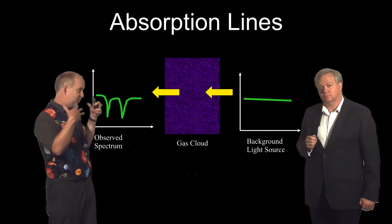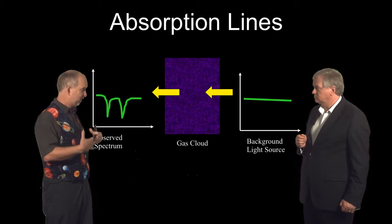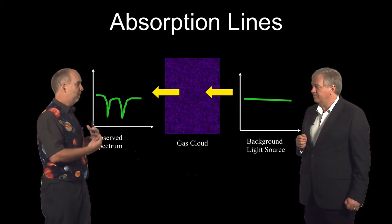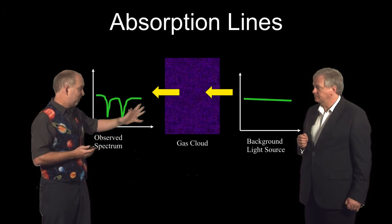So what you need is an optically thick thing, which is emitting something like a black body in the background, and then in front some optically thin gas. And this could actually often be the same gas cloud.